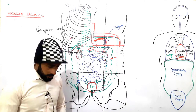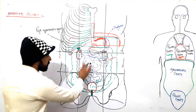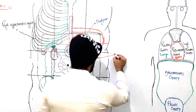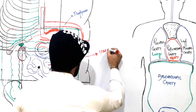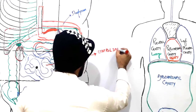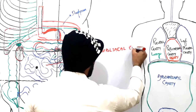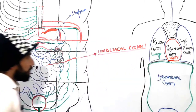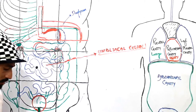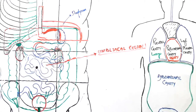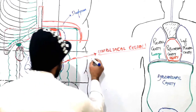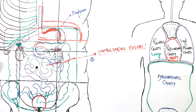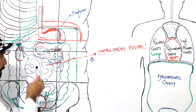Now we are going to discuss the organs which are present in the umbilical region. This region is our umbilical region — the middle part of the middle region in our abdomen. The organs will be grouped as in previous lectures: digestive organs, endocrine organs, excretory organs, reproductive organs, and lymphatics.